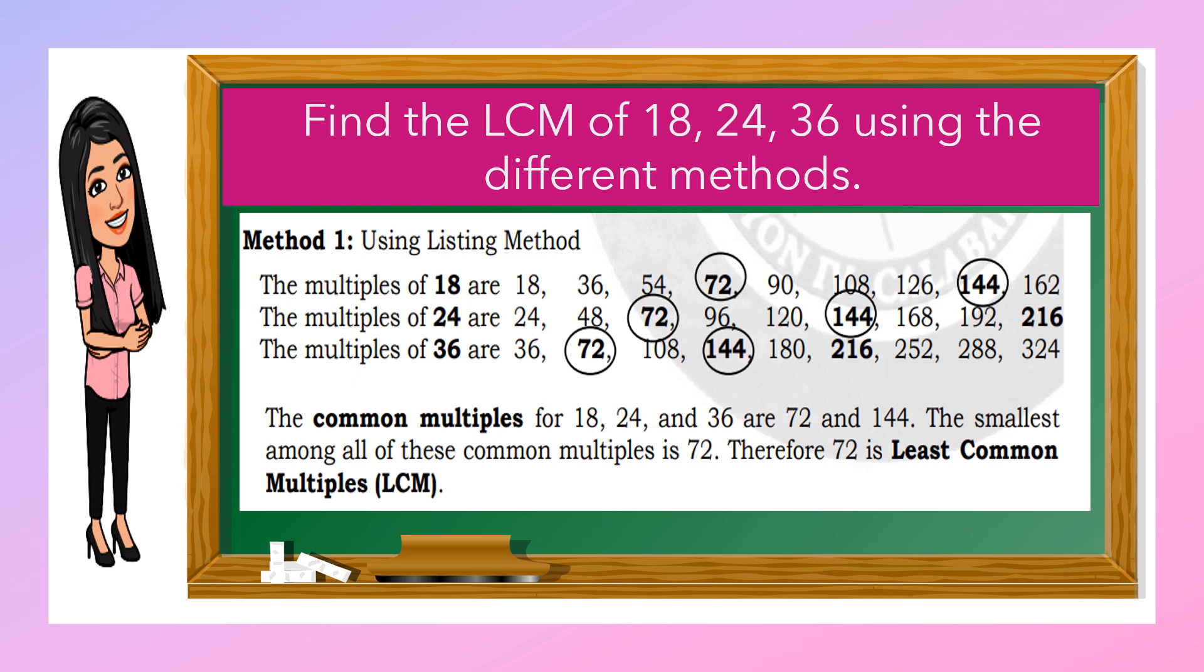The multiples of 24 are 24, 48, 72, 96, 120, 144, 168, 192, 216. The multiples of 36 are 36, 72, 108, 144, 180, 216, 252, 288, 324.